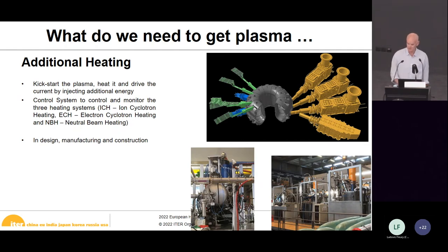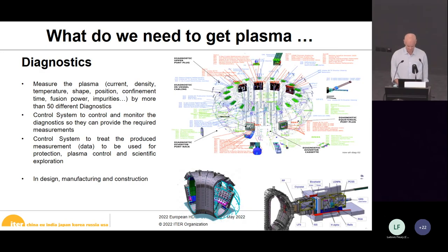Then we have additional heating, used to heat the plasma by injecting radio waves or neutral beams. There are three heating systems: ion-cyclotron heating, electron-cyclotron heating, and neutral beam heating. All are in design, manufacturing, and construction. Finally, we need all the diagnostics — instruments which measure plasma properties like current, density, temperature, and shape. The control system needs to control and monitor the diagnostics themselves, and also treat all the data they produce. These data are used for real-time feedback control, for protection, and for scientific exploration offline. The diagnostics are also in design, manufacturing, and construction.